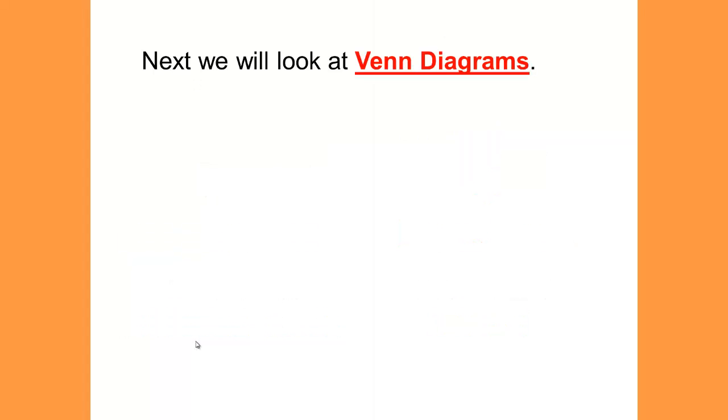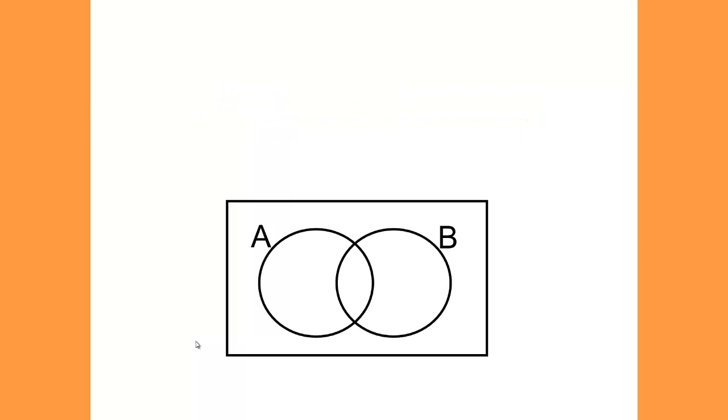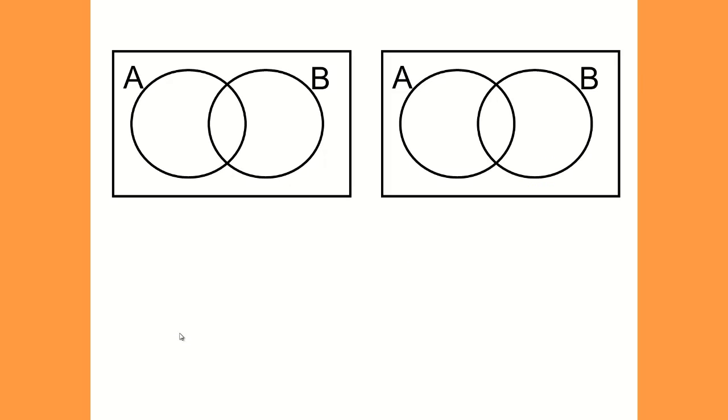Next we will look at the Venn diagrams. In a Venn diagram, the box represents the entire sample space. We have two circles that will represent two different events. Members that fit event A go in this circle. Members that fit event B go in this circle. Look at the shaded part in this Venn diagram. How could we describe this situation? Now look at the second Venn diagram and its shading. How would we describe it?